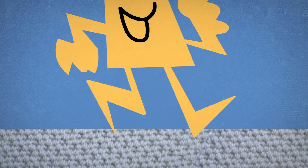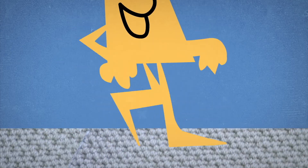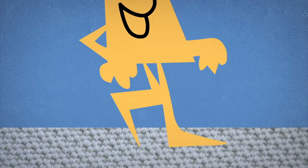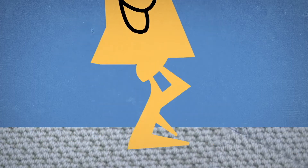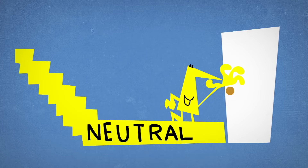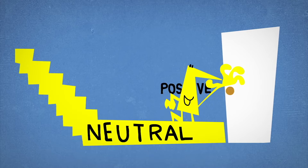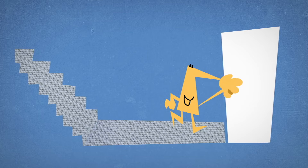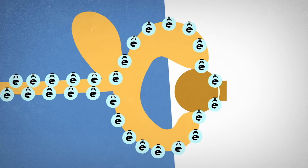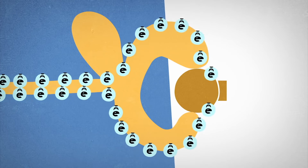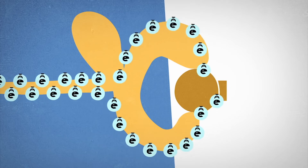When you walk across a rug, electrons from your body will rub off onto it, while the rug's insulating wool will resist losing its own electrons. Although your body and the rug together are still electrically neutral, there is now a charge polarization between the two. And when you reach to touch the doorknob — zap!